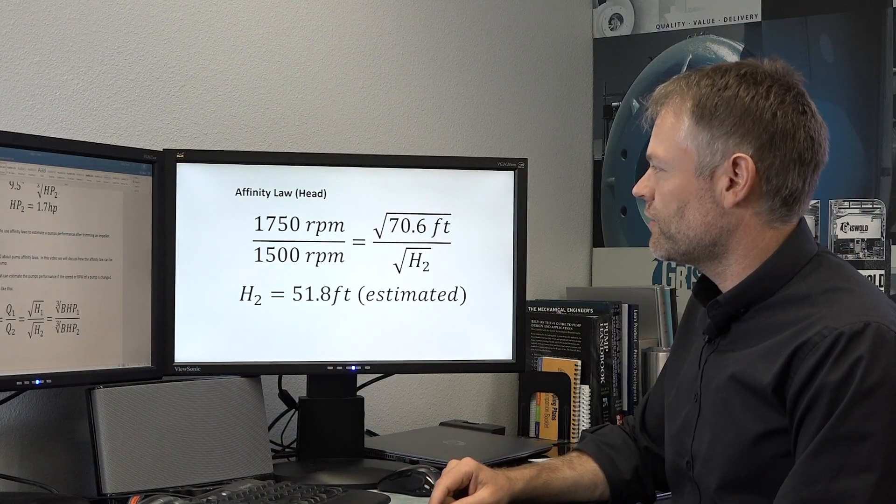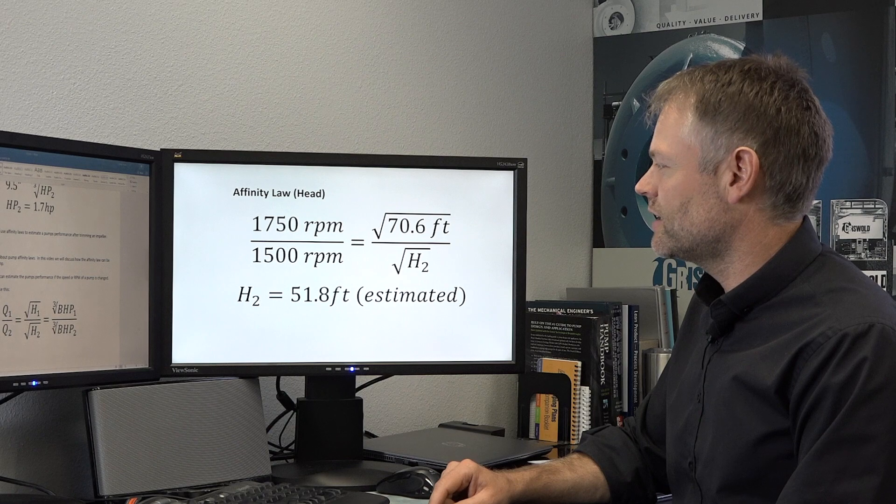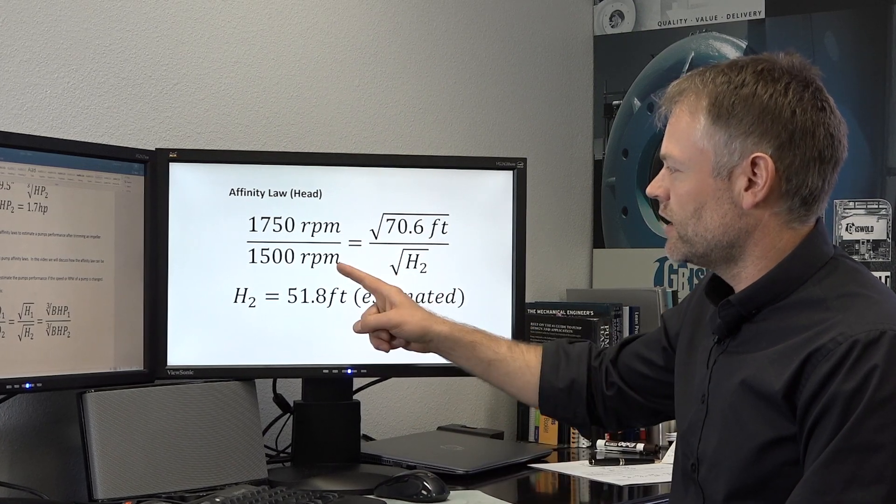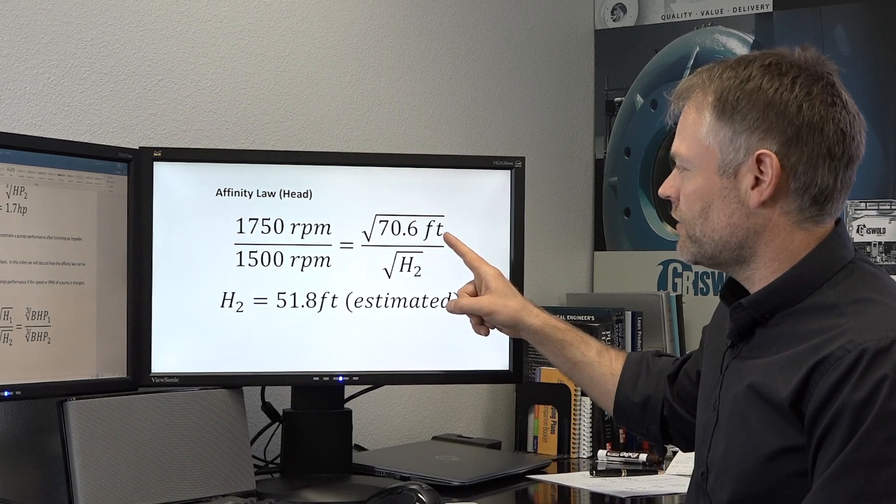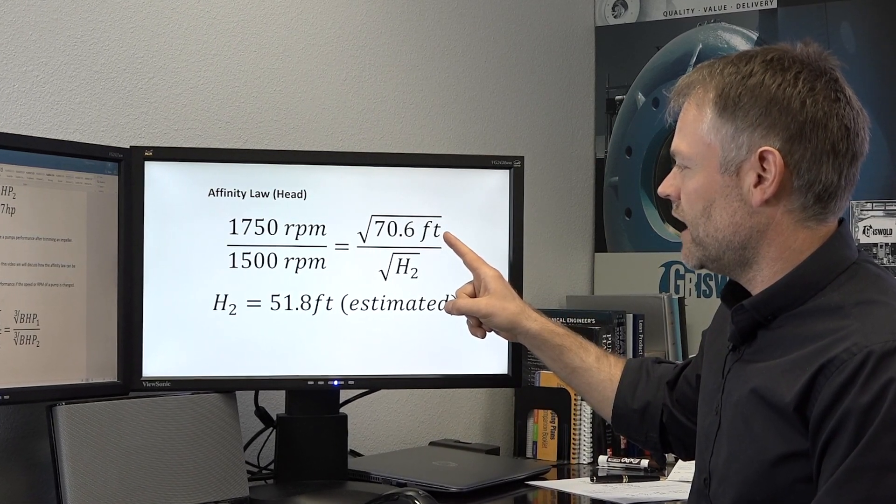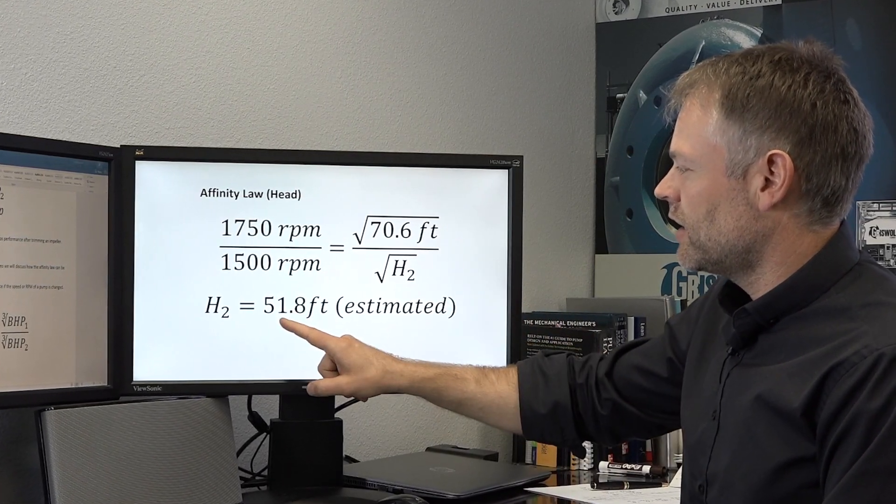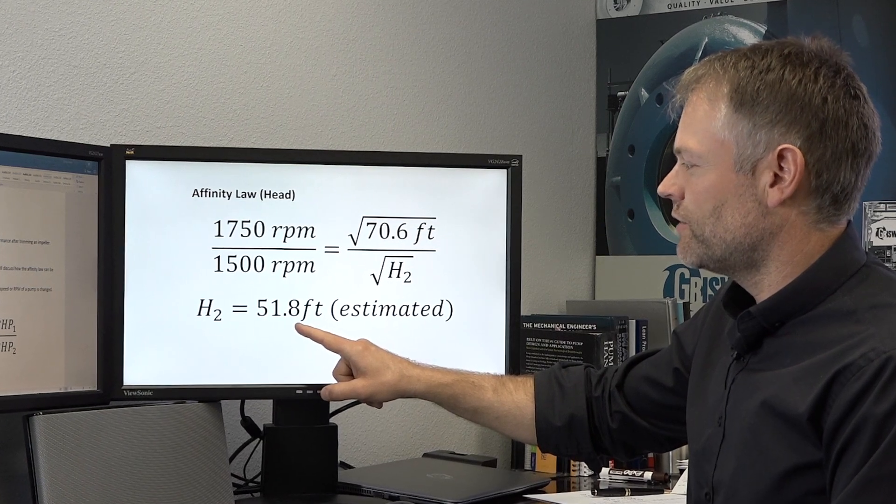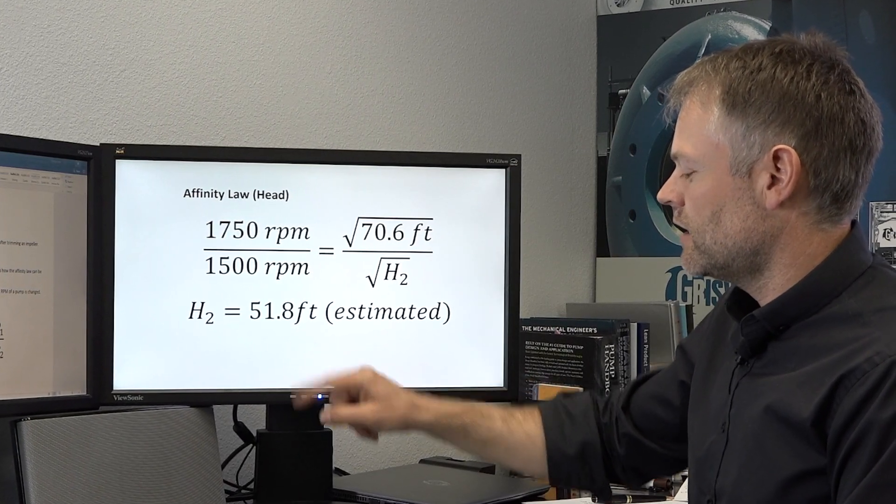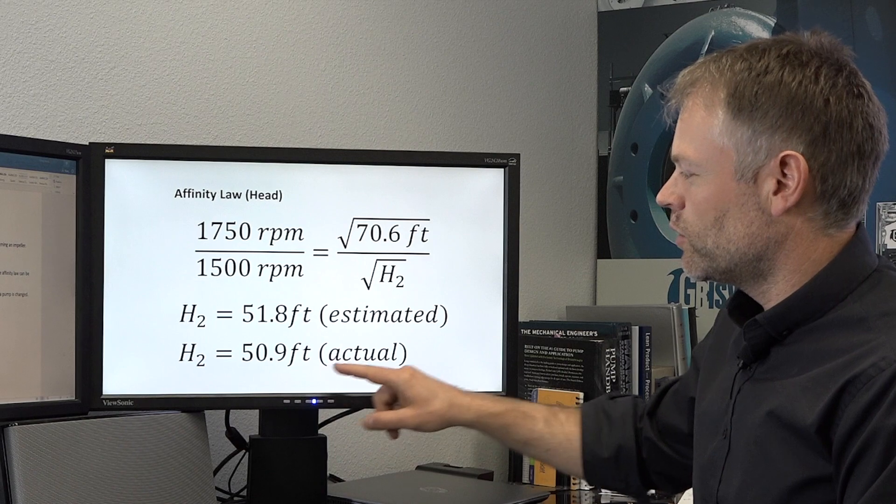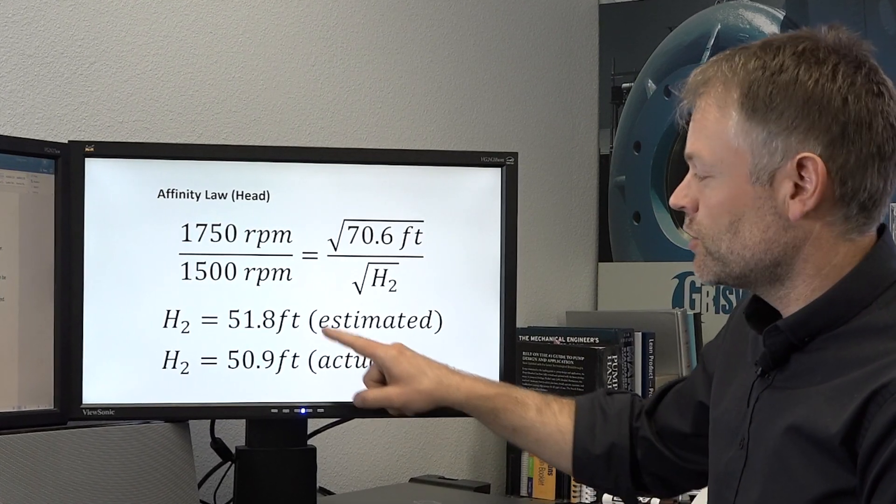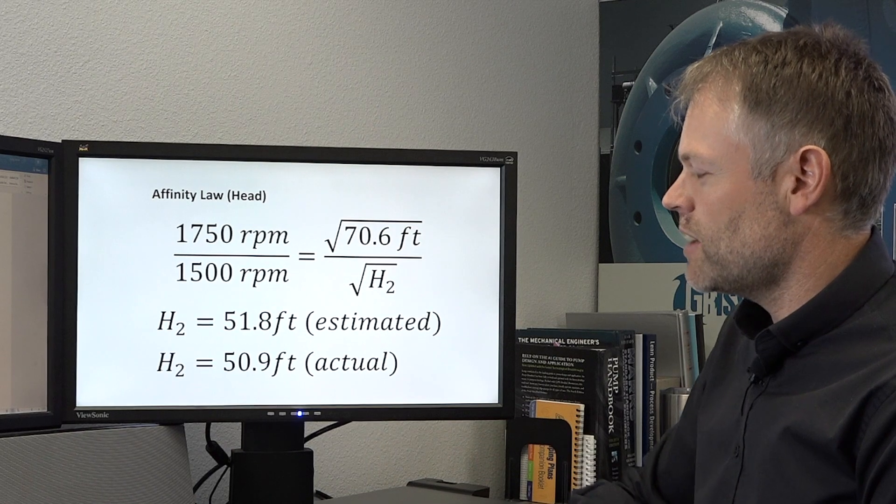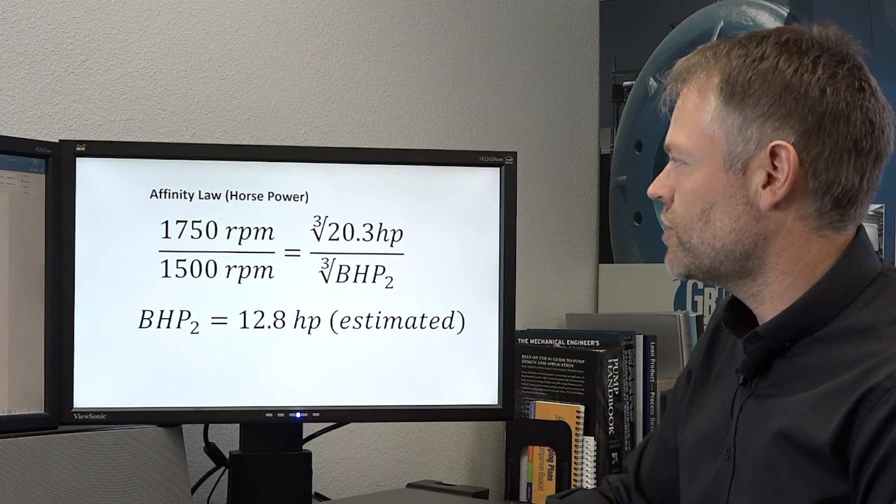Let's do a similar comparison for the predicted head. In this case we're going to include our change in speed. We started with 70.6 feet of head. The head is now estimated to have dropped to 51.8 feet, and when we were in the test lab we saw it actually at 50.9. So again, a very close estimation of how the pump's performance changes.